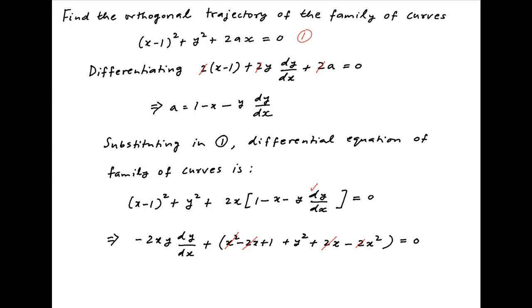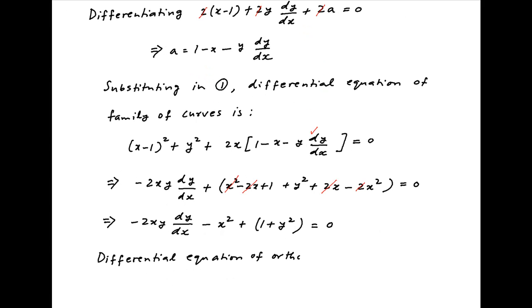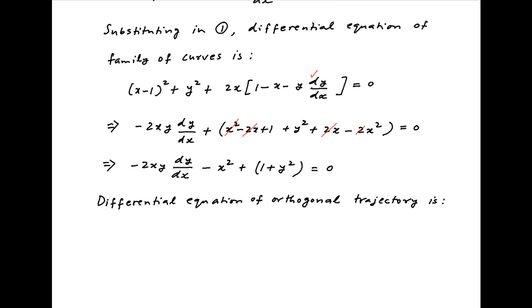This simplifies to minus 2xy times dy/dx minus x square plus 1 plus y square is equal to 0. The differential equation of the orthogonal trajectory is obtained by replacing dy/dx with minus dx/dy, giving minus 2xy times minus dx/dy minus x square plus 1 plus y square is equal to 0.